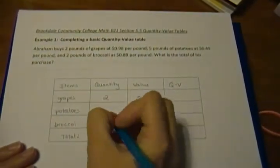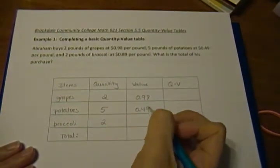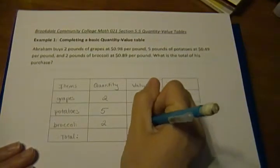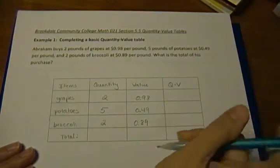For the broccoli, we have two pounds, so our quantity is two, and our value is the eighty-nine cents or 0.89.